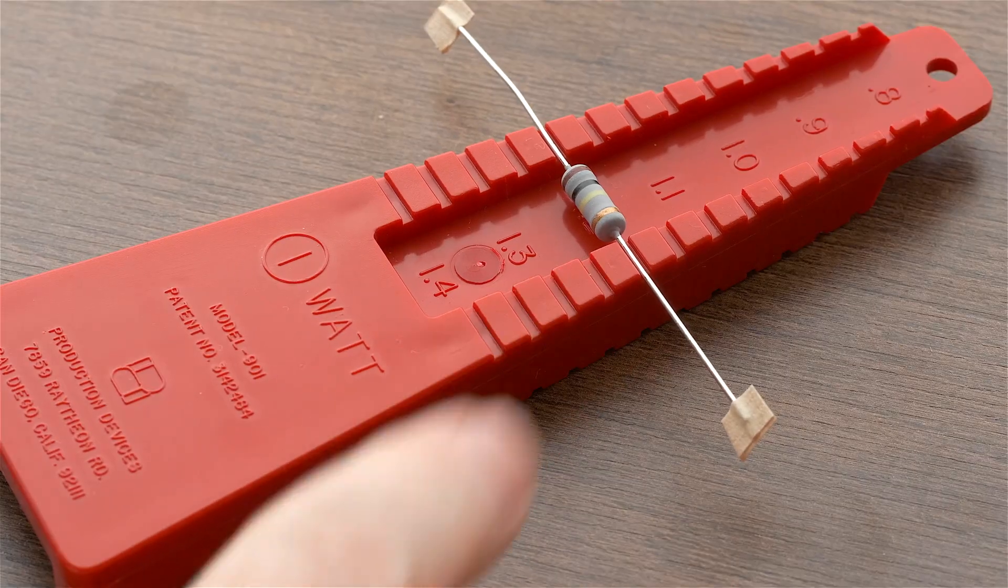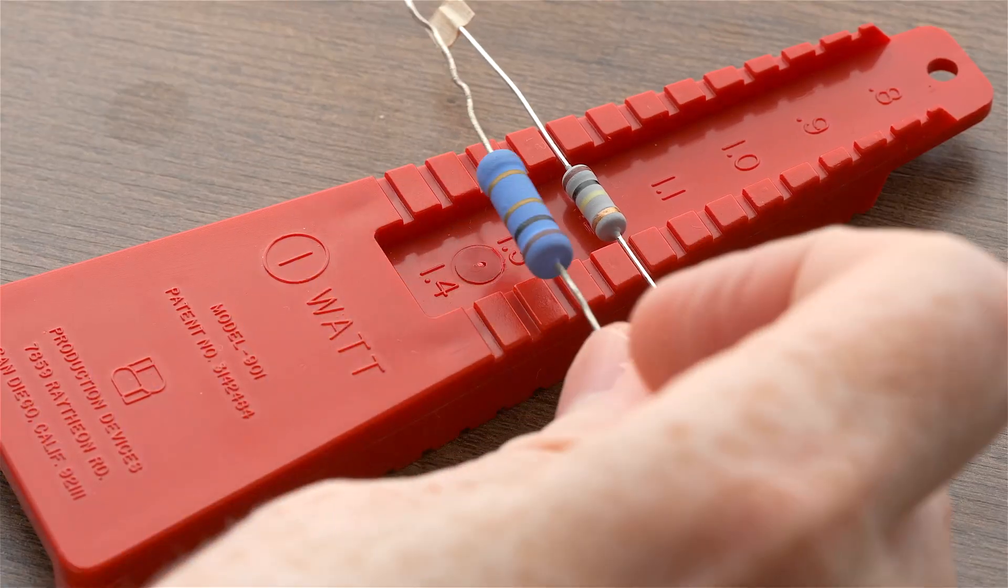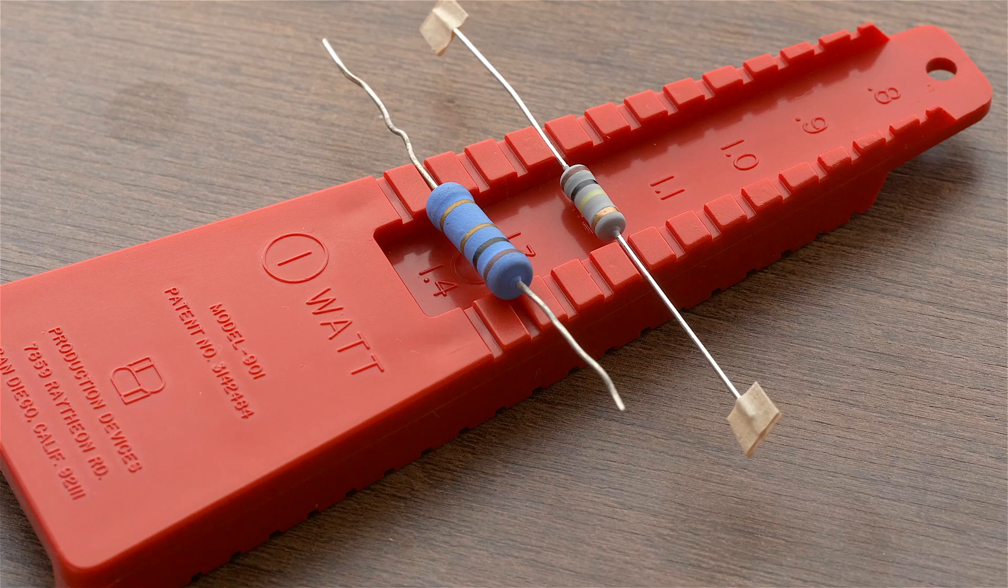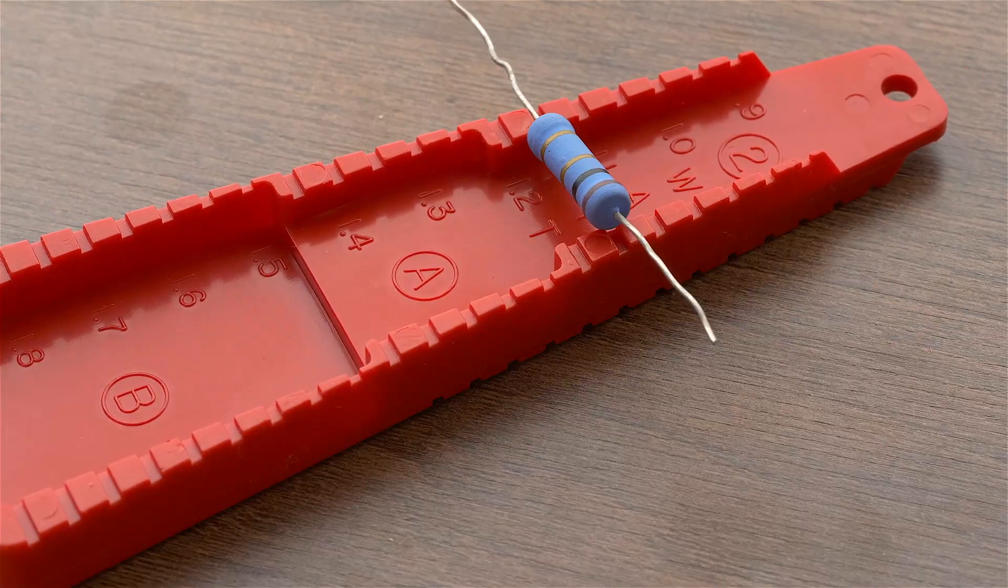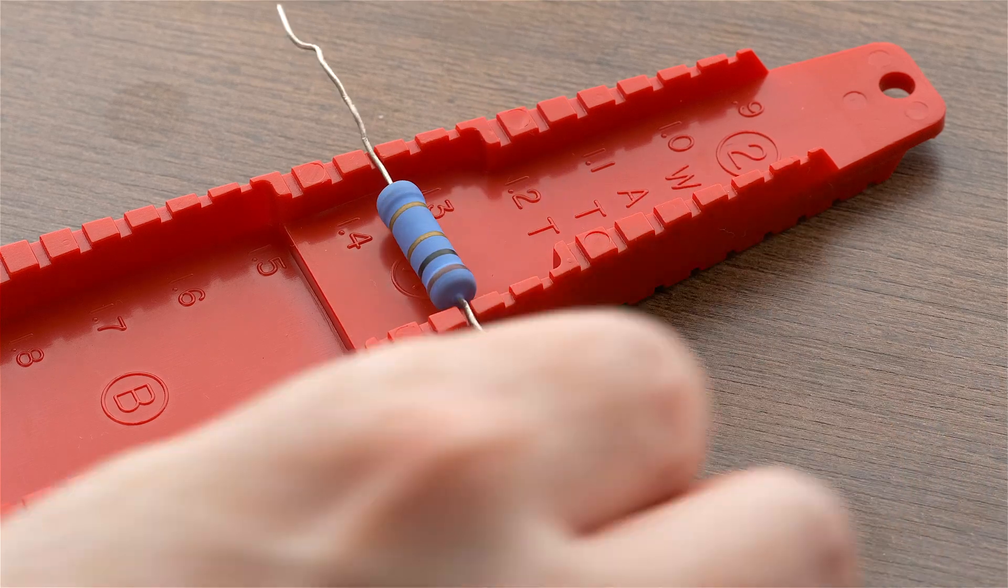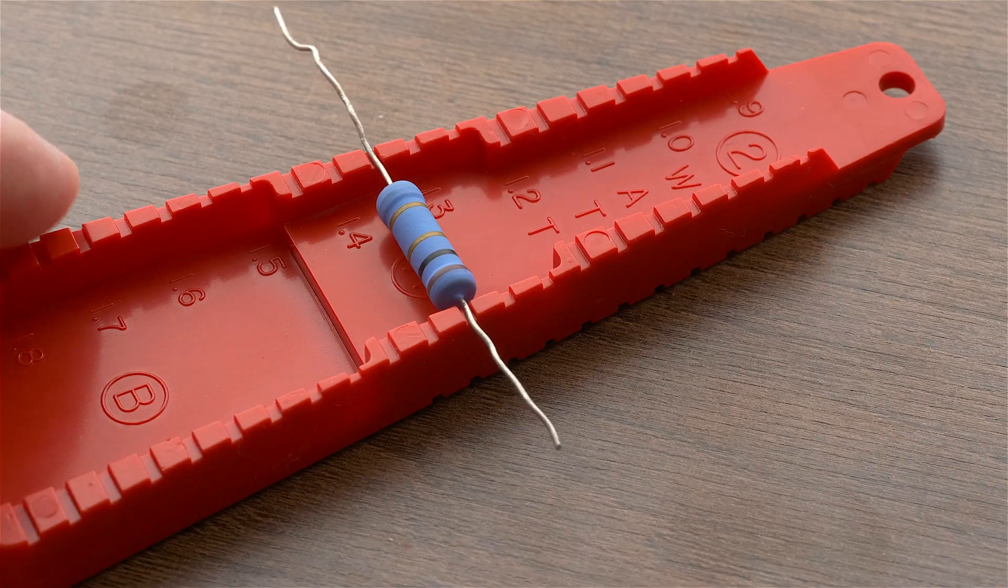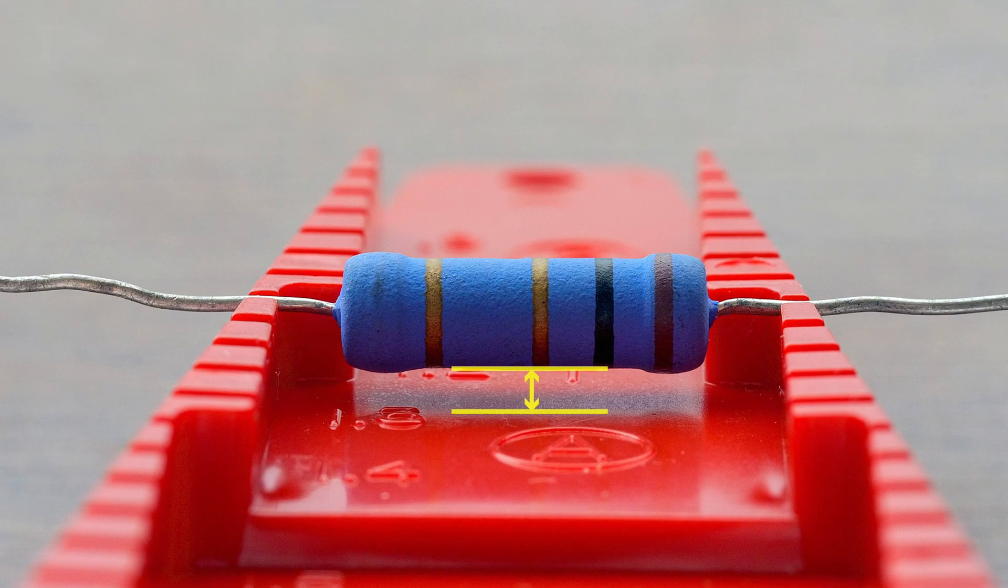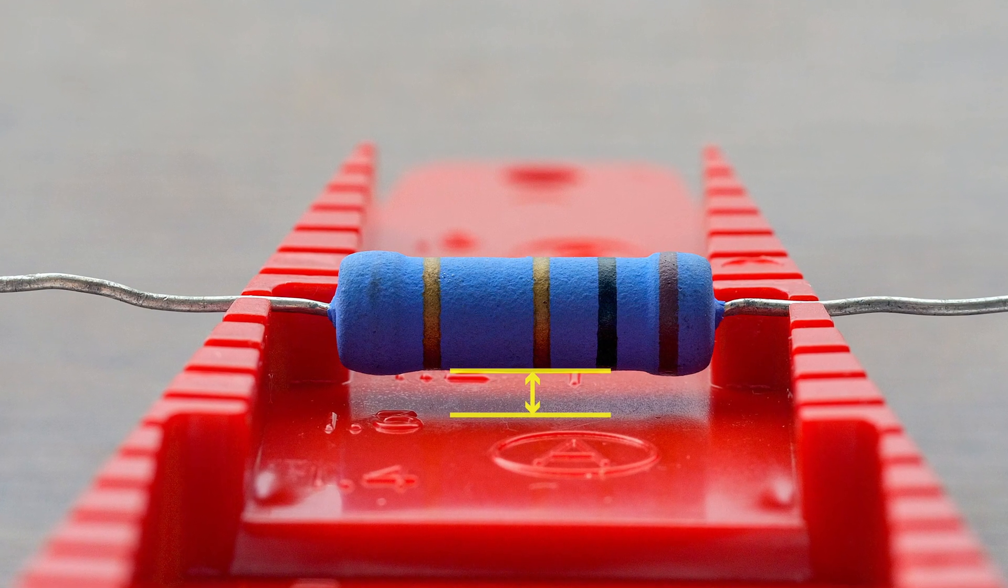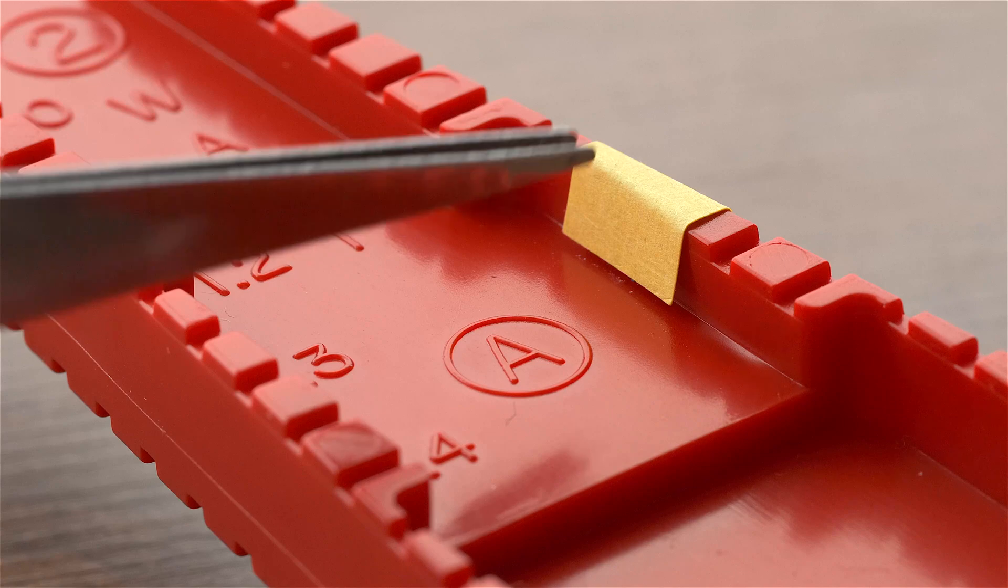For even larger components, we see that 1-watt fits fine on the 1-watt side. But of course, this 3-watt resistor doesn't. Flipping it over though, it doesn't fit in the 2-watt section. But it does fit in the middle section. We also see there's a pretty good gap between the bottom of this 3-watt resistor and the bottom of the central section of the 901 tool.